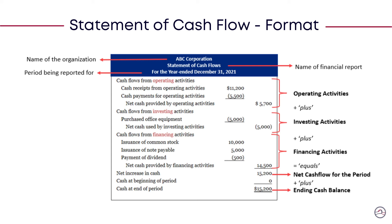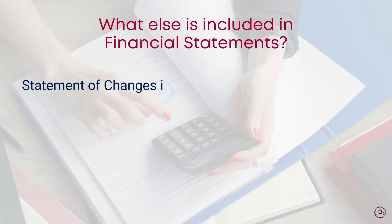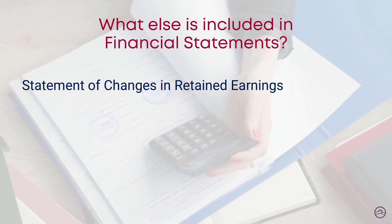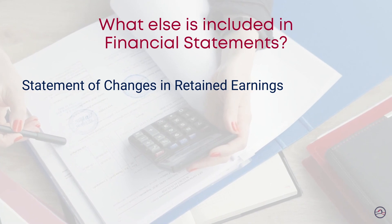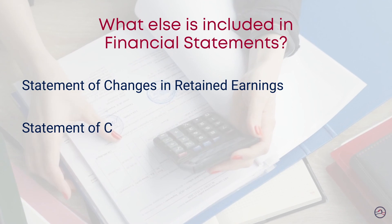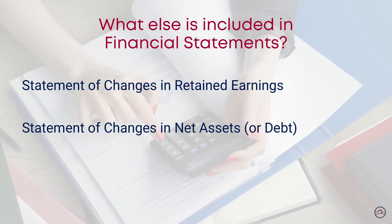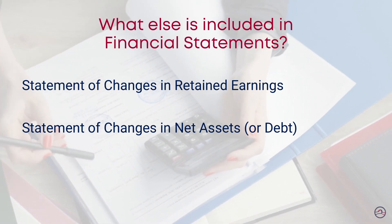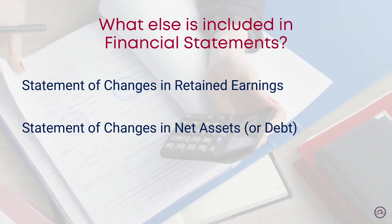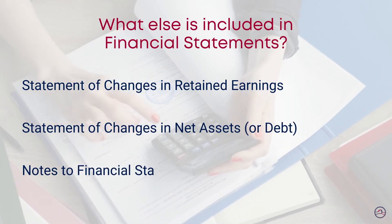So what else is included in financial statements? The statement of changes in retained earnings explains how much of an organization's net earnings are being held back in the business and what is being distributed to the owners. The statement of changes in net assets or debt shows the acquisition of tangible capital assets in the accounting period, as well as other significant items explaining the change in net debt and the differences between surplus and deficit for the accounting period. Notes to financial statements provide detailed explanations and expanded disclosures that complement reported amounts in the financial statements.